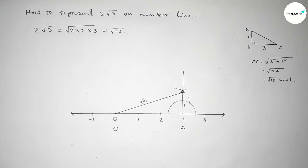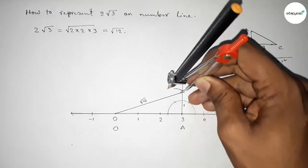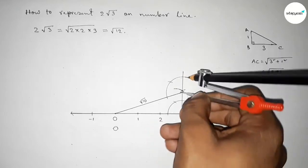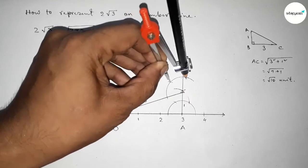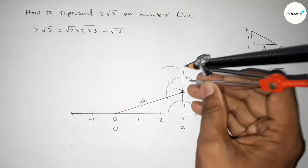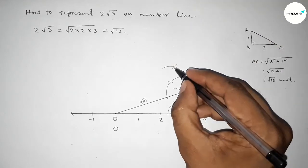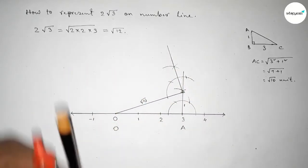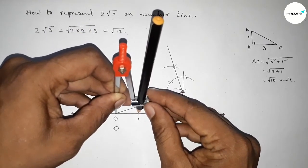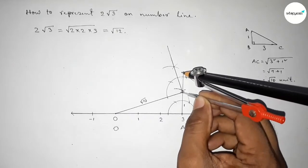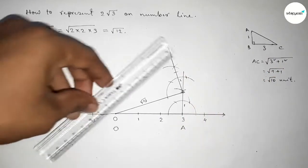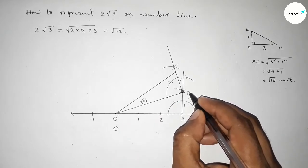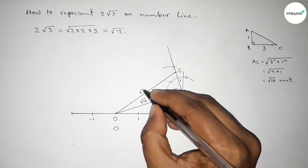Now we represent √11. We draw a 90-degree angle at the next point using compass by the same method. Taking 1 unit length and placing the compass to cut the arc, we join the line. This hypotenuse, from right angle triangle OB, is obviously √11.